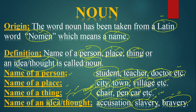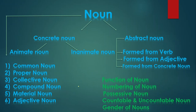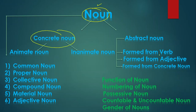So the definition of noun is: noun is the name of a person, place, thing, or an idea/thought. It is taken from the Latin word nomen, which means a name. That covers the definition and origin of noun with its examples. Now let's move towards the kinds of noun. Noun has two main kinds: the first is concrete noun and the second is abstract noun.